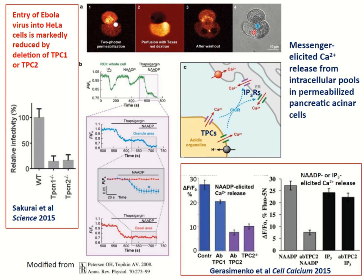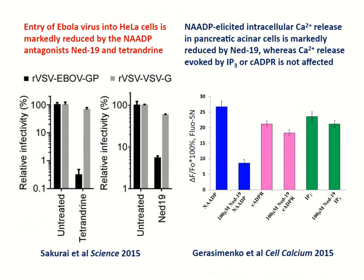What is important in the context of this talk is that the entry of the Ebola virus is also markedly reduced by deletion of either two-pore channel type 1 or type 2. We can also use the NAADP antagonist NET19, and as you can see, NET19 markedly reduces the uptake of the Ebola virus but not other control viruses. The effect of NET19 is very specific for NAADP in the pancreatic acinar cells: it inhibits NAADP-evoked calcium release but has no effect on cyclic NADP-evoked release or IP3-evoked release.